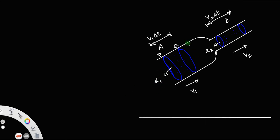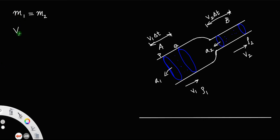Let the density of the fluid at section A be rho1 and the density of the fluid at section B be rho2. Then by the law of conservation of mass, the mass of the fluid flowing through section A equals the mass of the fluid flowing through section B, that is m1 equal to m2. Mass is equal to volume at section A into density at section A.